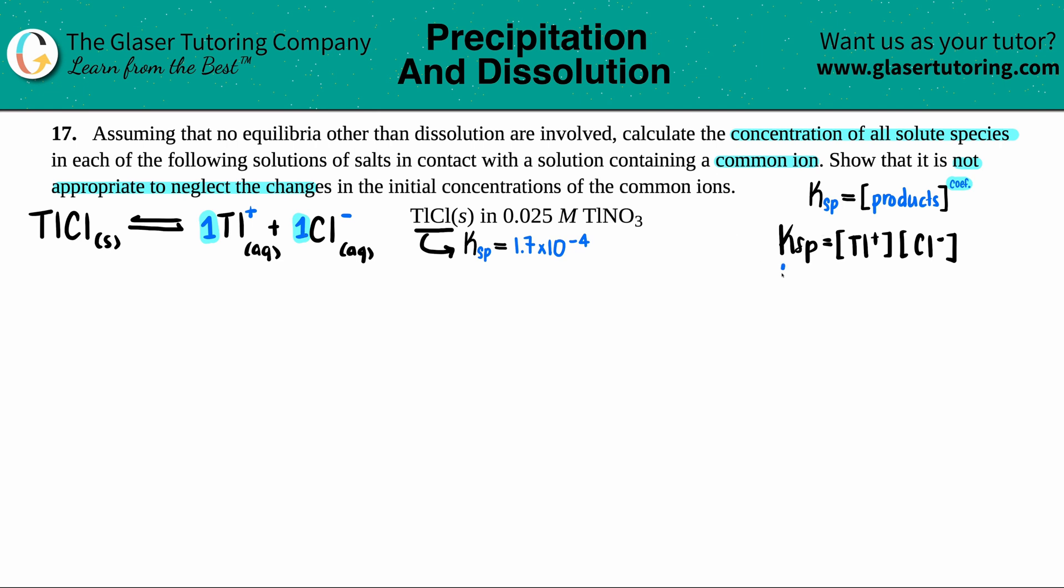Now let's write down what I know. Ksp is 1.7×10⁻⁴, but I don't know what these concentrations are. That's where I'm going to start using x values. I do see that I have another compound. Remember, because of our solubility rules, any nitrate ion is always aqueous, no exceptions. This compound will break down into its ions.